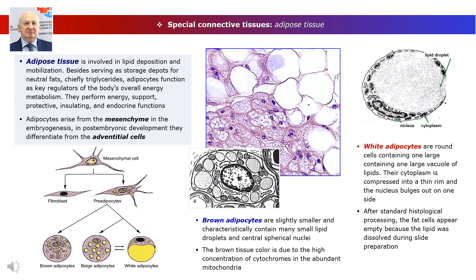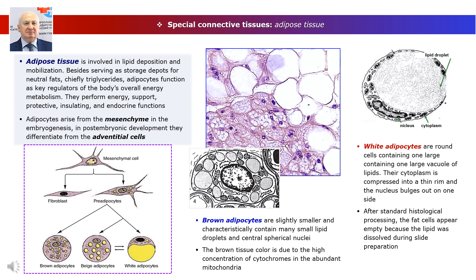Adipose tissue is involved in lipid deposition and mobilization. Besides serving as storage depots for neutral fats, chiefly triglycerides, adipocytes function as key regulators of the body's overall energy metabolism, performing energy, support, protective, insulating, and endocrine functions. Adipocytes arise from the mesenchyme in embryogenesis; in post-embryonic development they differentiate from adventitial cells. There are two types of adipocytes and accordingly two types of adipose tissue: white and brown. White adipose tissue is distributed throughout the body in subcutaneous adipose tissue, mesenteric omentum, and retroperitoneum.